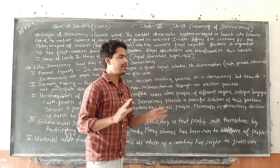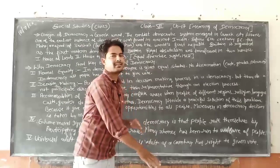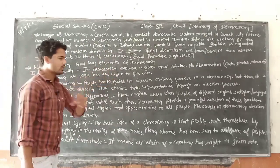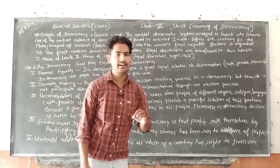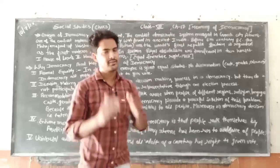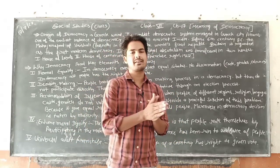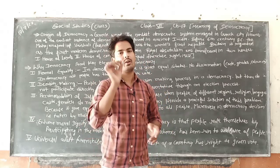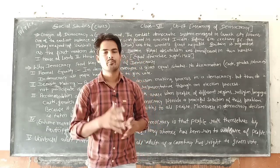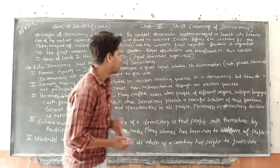If he or she is an Indian citizen, then he or she has the right to give a vote. In democracy, all people have the right to vote. Har ek vyakti ke paas vote dene ka adhikar hota hai — only 18 years and above. The minimum age is 18 years or above.